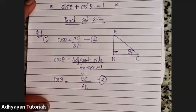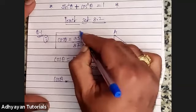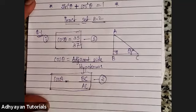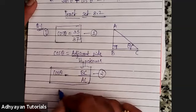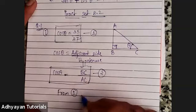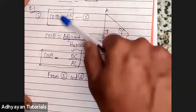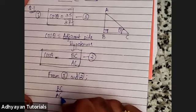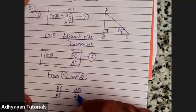Now have a look at equation 1 and equation 2. Both left-hand sides are equal. If the left-hand sides of two equations are equal, then the right-hand sides are also equal. That means BC upon AC equals 35 upon 37.